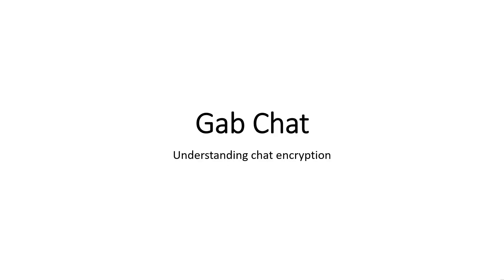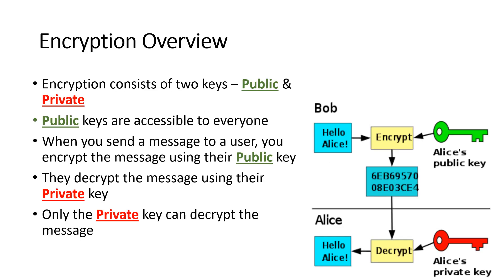Understanding chat encryption: encryption consists of two keys — public and private. Public keys are accessible to everyone. When you send a message to a user, you encrypt the message using their public key. They decrypt the message using their private key. Only the private key can decrypt the message.